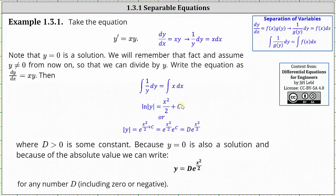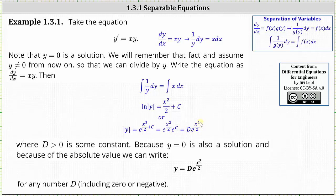Now we want to solve for y. We can write the log equation as an exponential equation, or raise e to the power of both sides, giving us the absolute value of y equals e raised to the power of x squared divided by two plus c. Because we have a sum in the exponent, we can write this as e to the power of x squared divided by two times e to the c. Since e to the c is just some constant, which we'll call d, this gives us the absolute value of y equals d times e to the power of x squared divided by two.